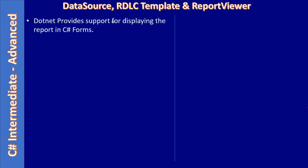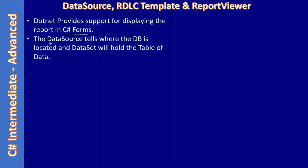.NET provides support for displaying the report in a C# form, so that is the destination — the C# form where we will display the report. The data source tells where the database is located, and a dataset will hold the table of data. In this example we will be using the pubs database in Microsoft SQL Server as our data source, and the dataset will retrieve a specific table from it.